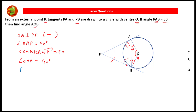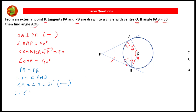PA is equal to PB, and therefore in triangle PAB, angle A equals angle B equals 50 degrees — reason: opposite angles of the isosceles triangle are equal. Therefore angle ABO is equal to 40 degrees.